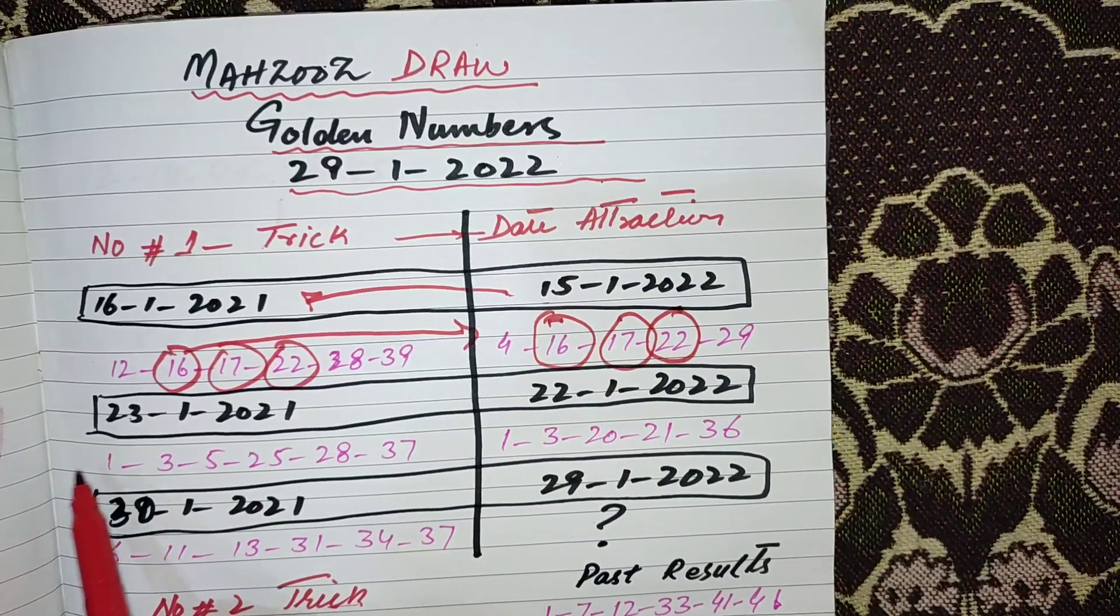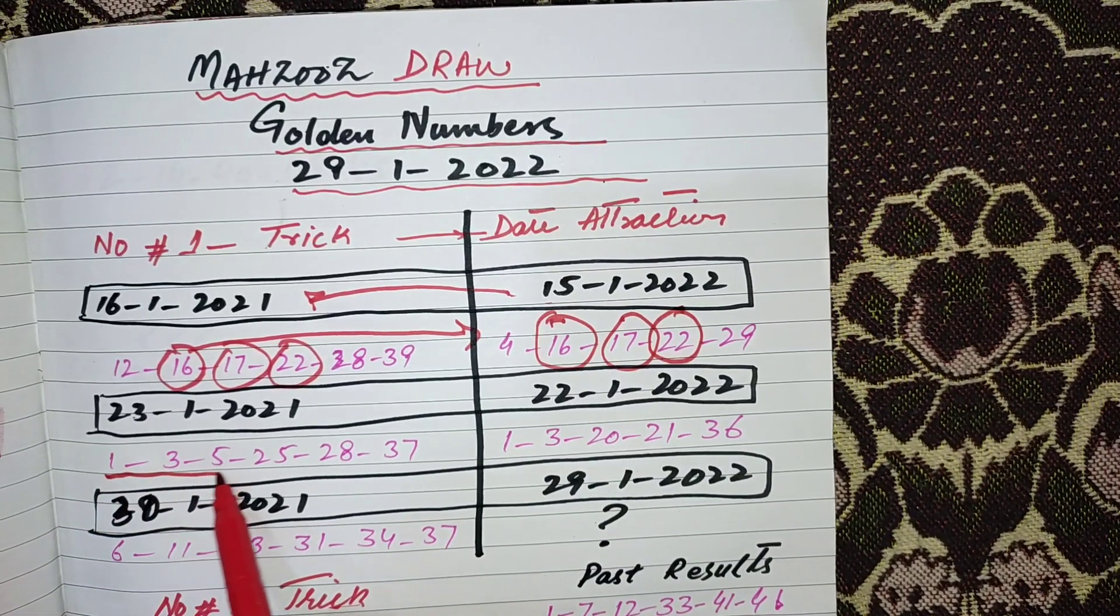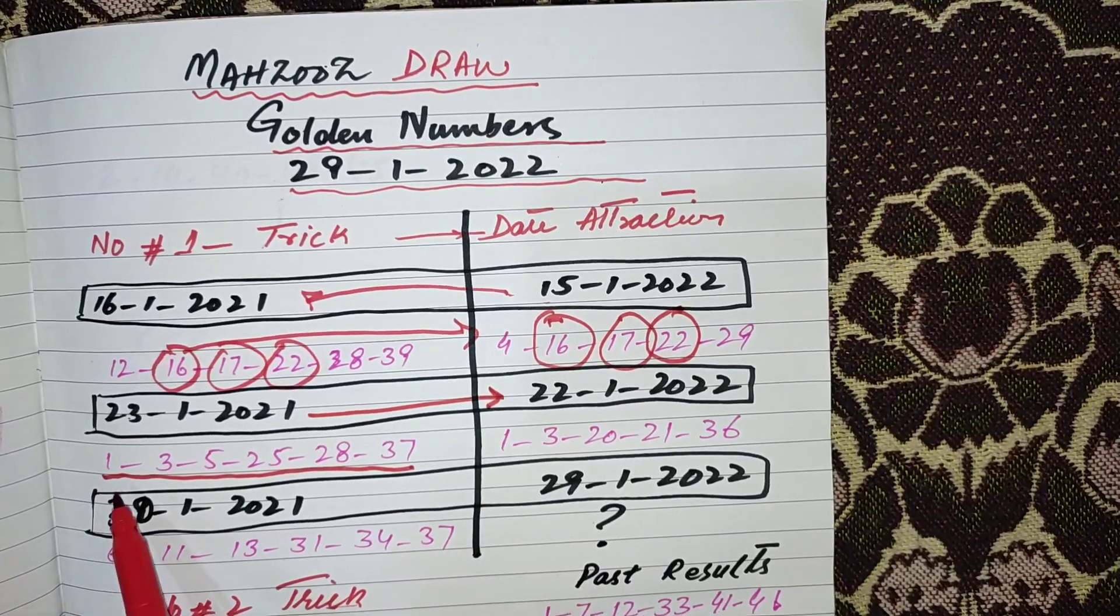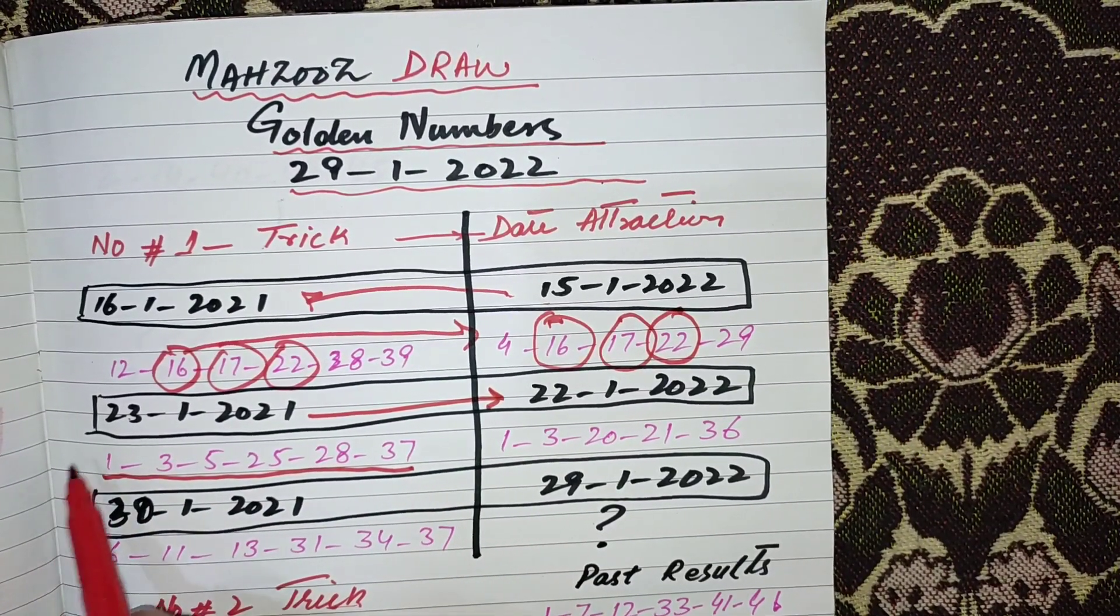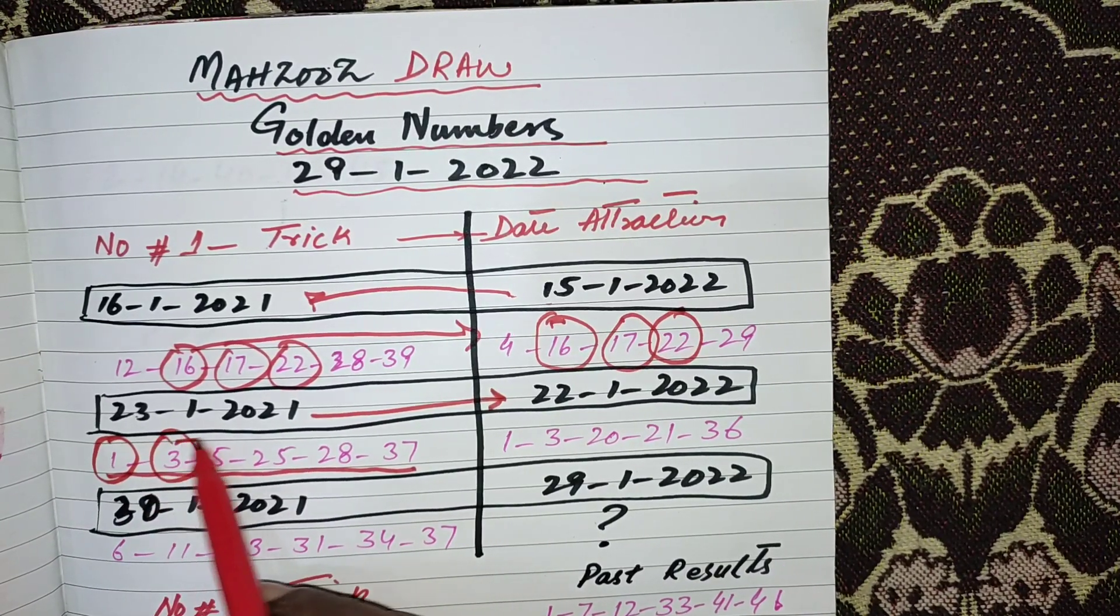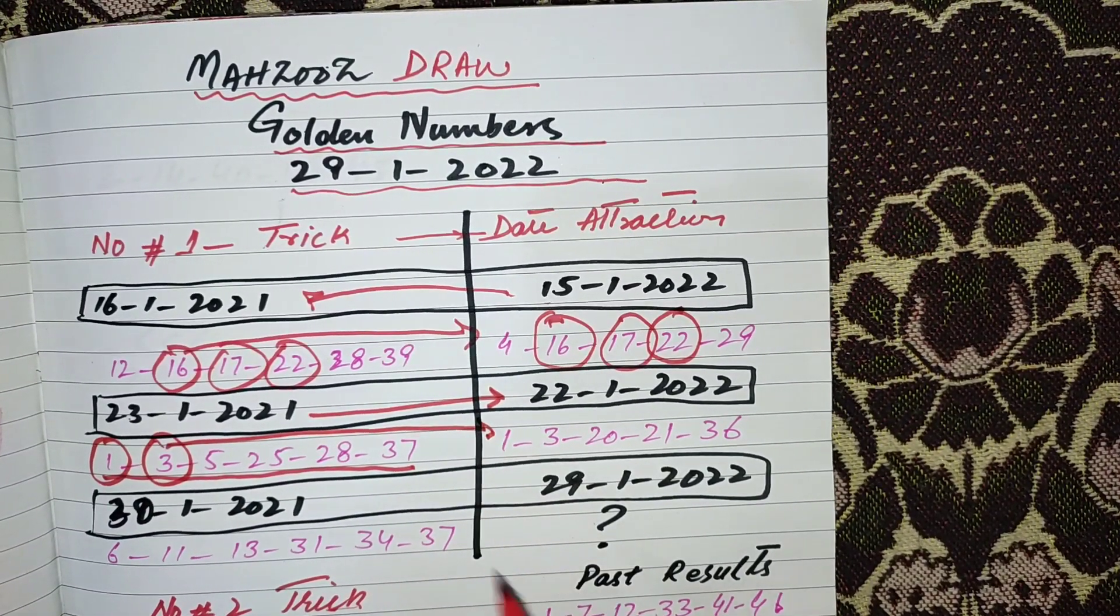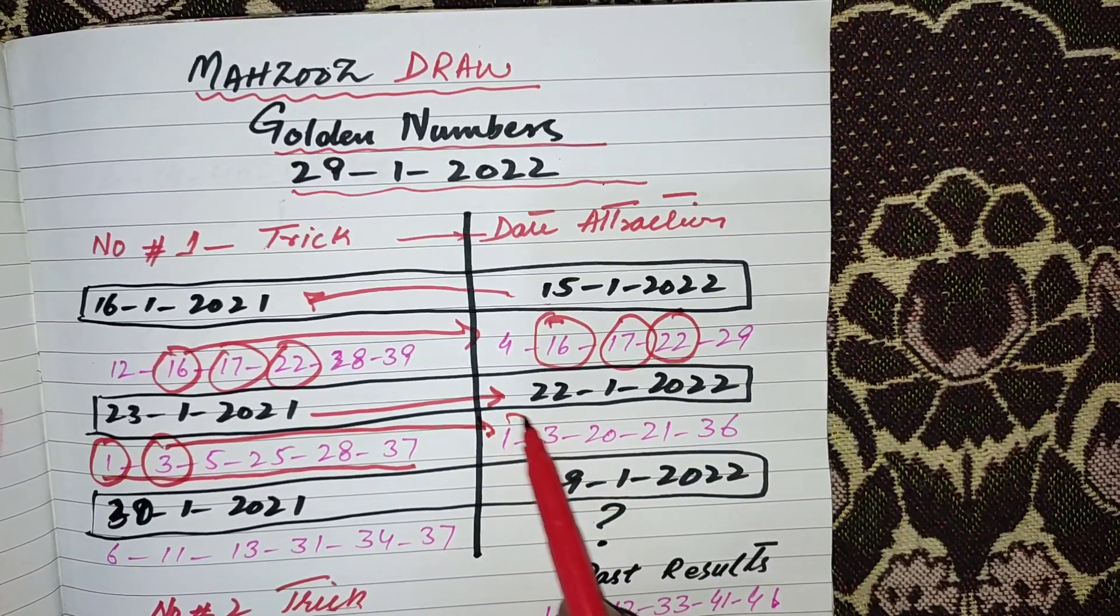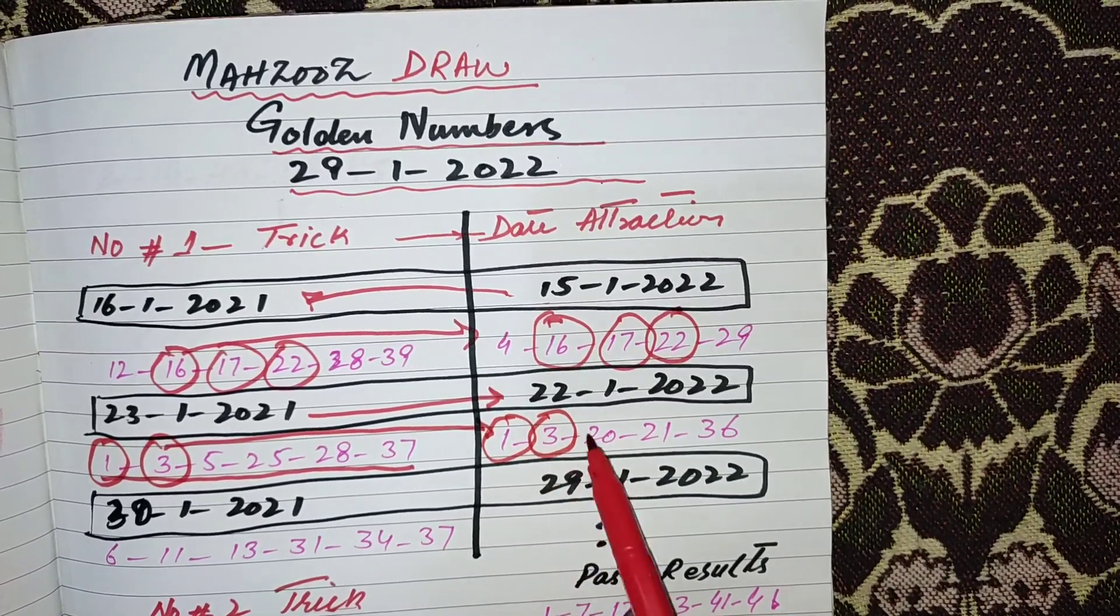In my previous video I told you these are the numbers if the date will attract. Then these are most important numbers. And you can see 1 and 3 have come in our previous result: 1, 3, 20, 21, and 36. Two numbers came according to this trick.